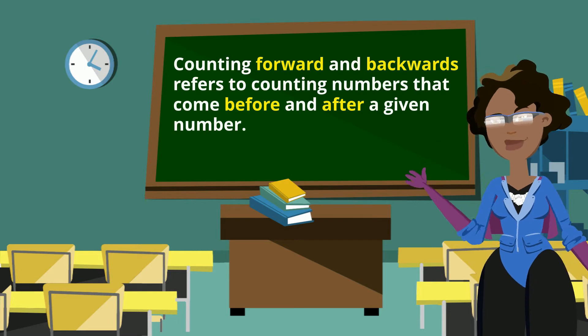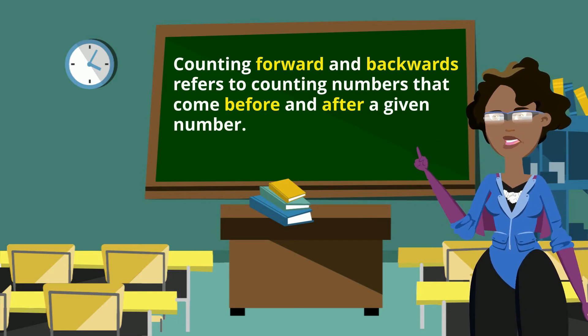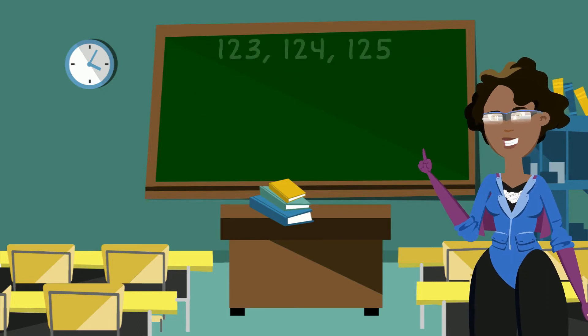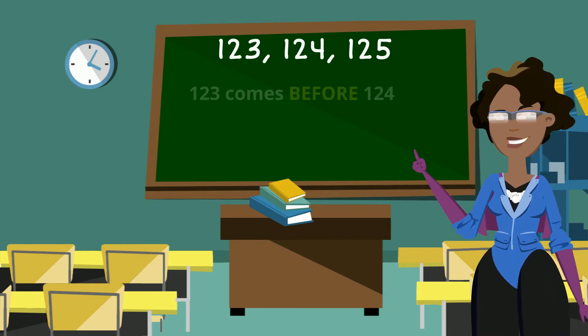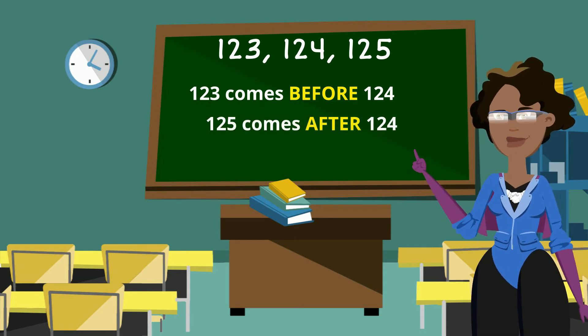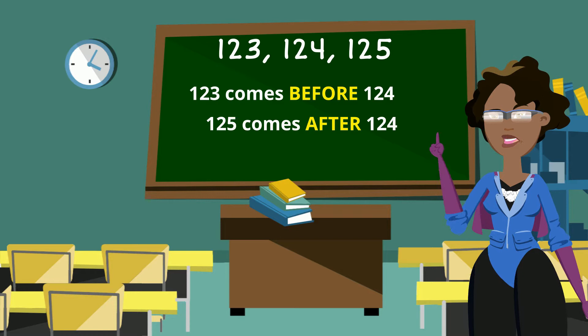Counting forward and backward refers to counting numbers that come before and after a given number. Look at these three numbers. 123 comes before 124 and 125 comes after 124.